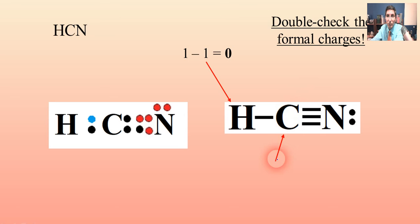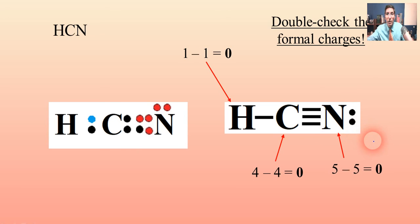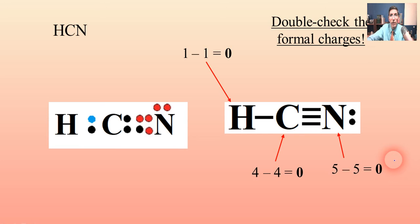For carbon, the periodic table says it has four valence electrons. Every bond touching that atom counts for one, so we subtract four bonds and get four minus four equals zero. For nitrogen, it normally has five. We count the bonds and the unshared electron pair — remember, every unshared electron pair counts as two — giving us five minus five equals zero.